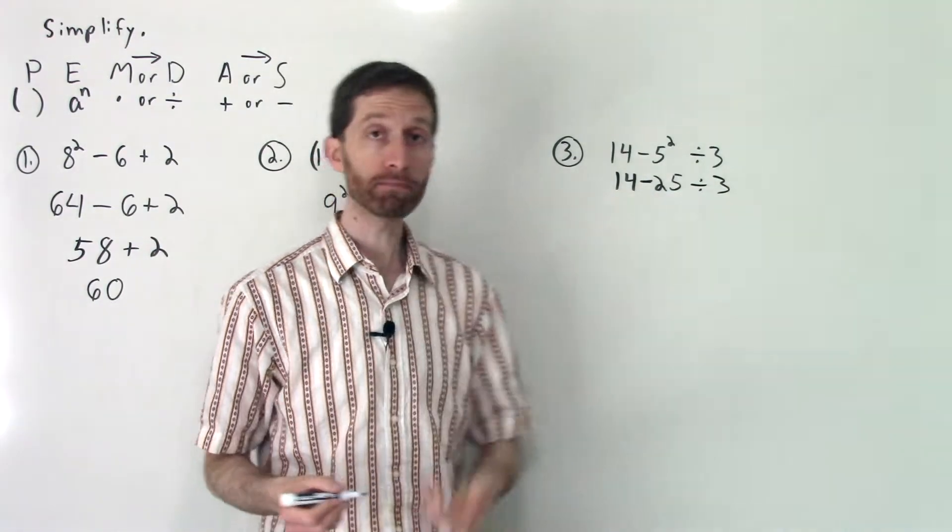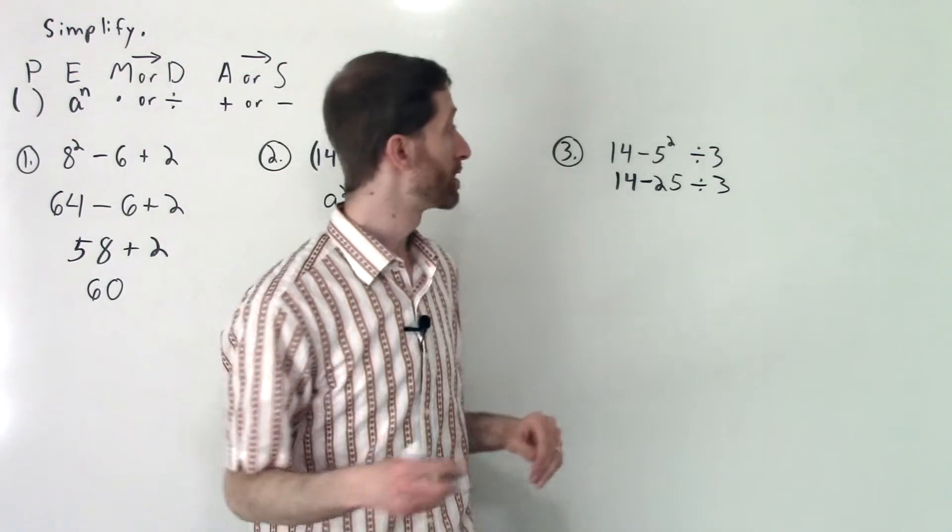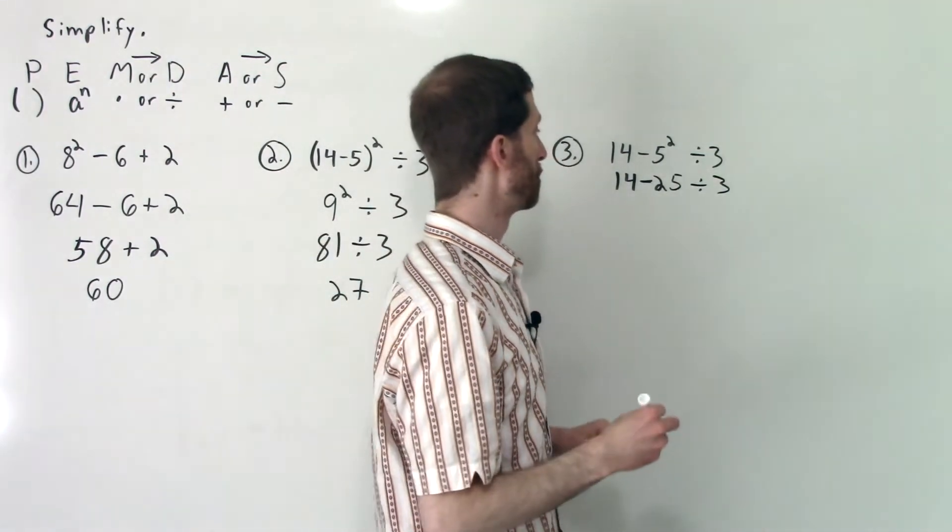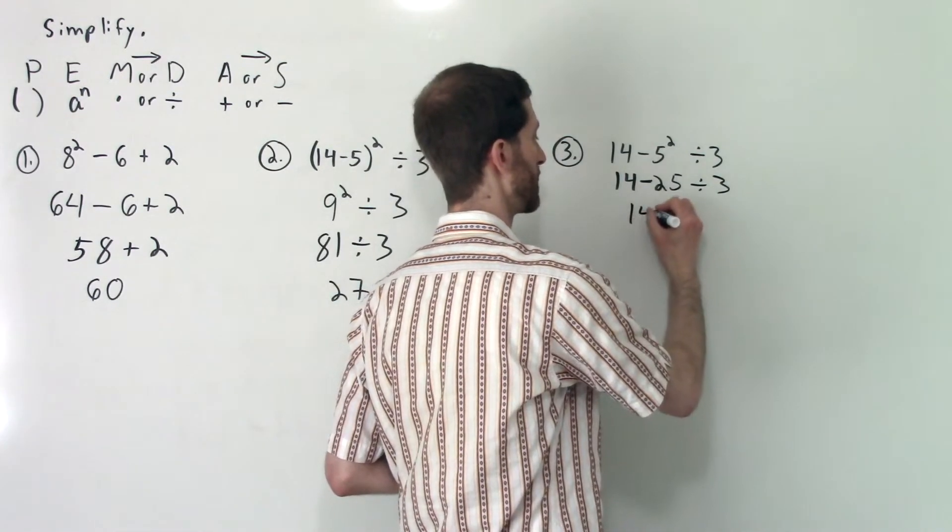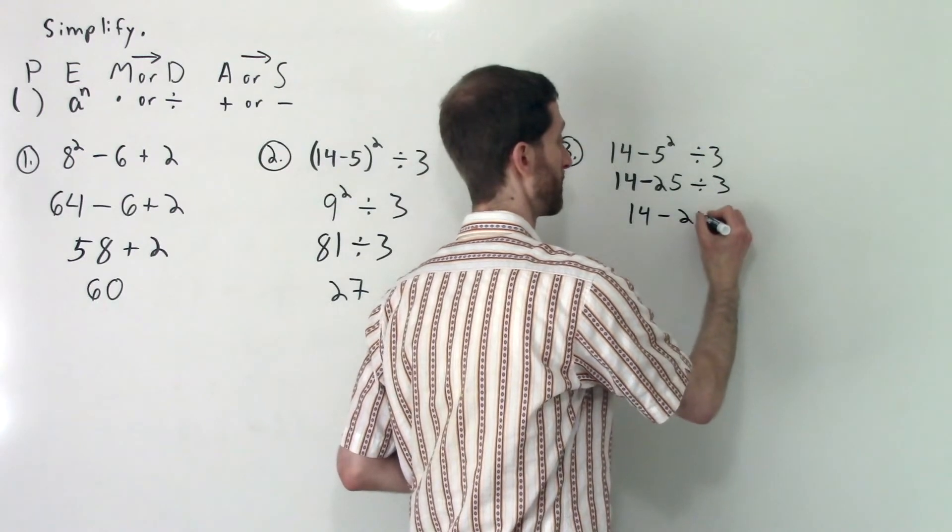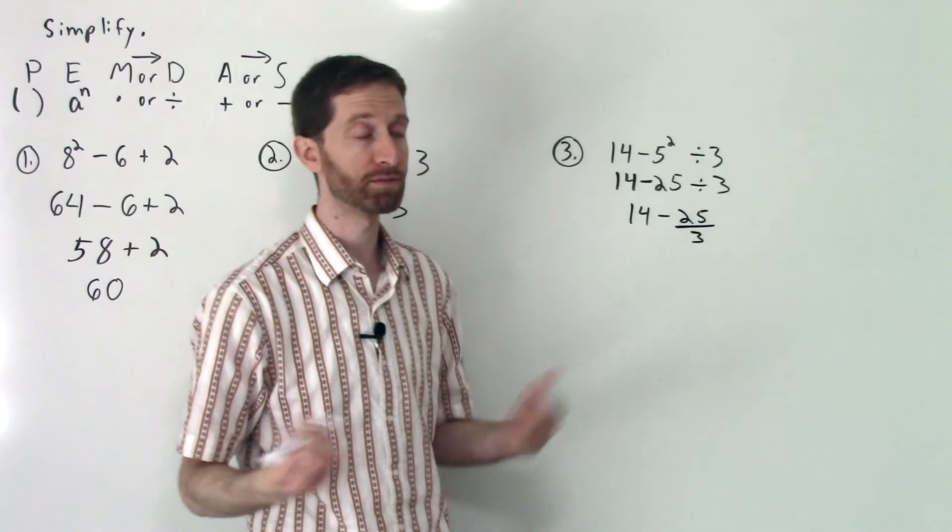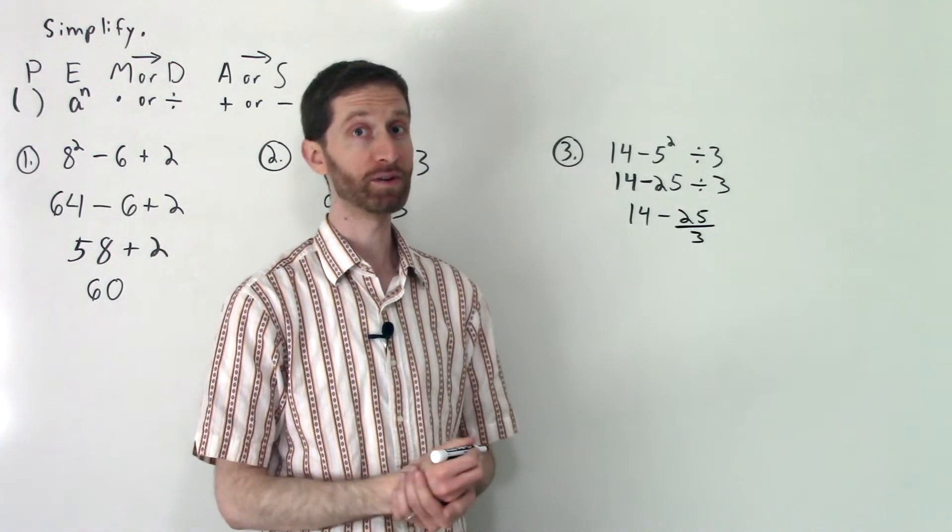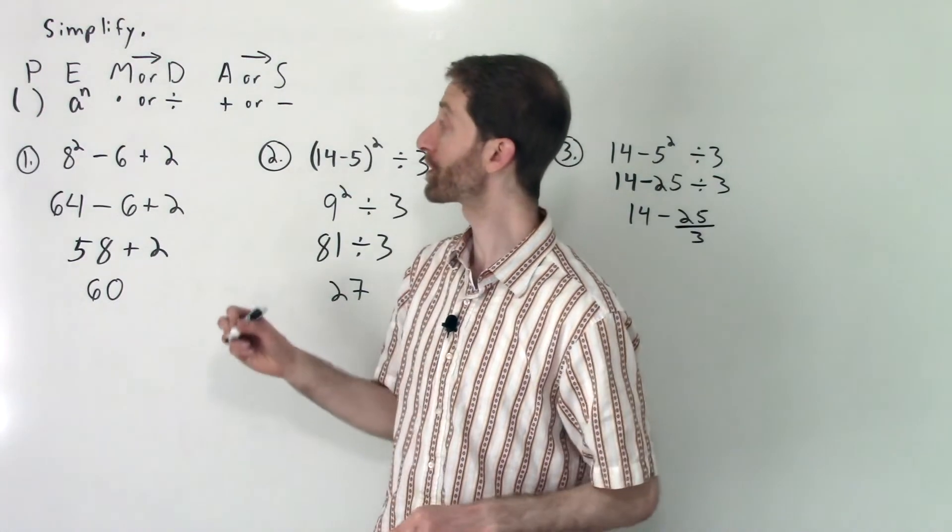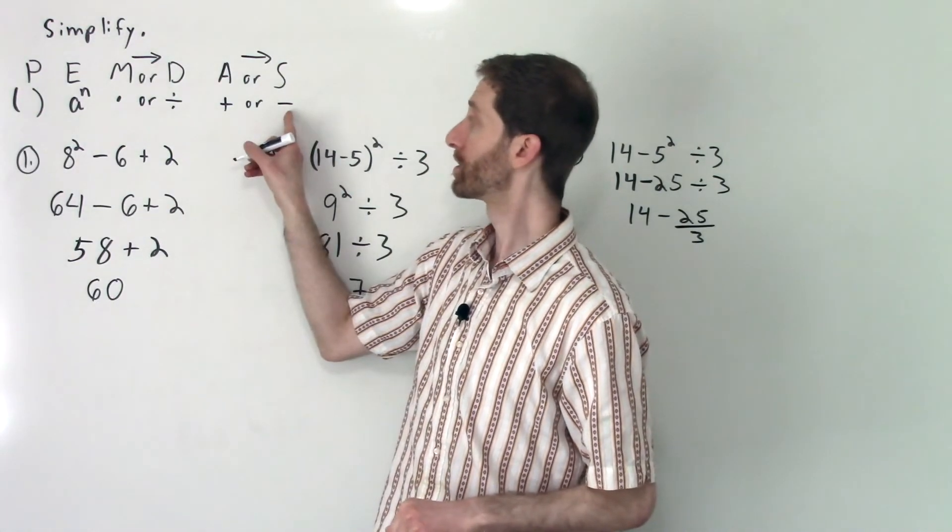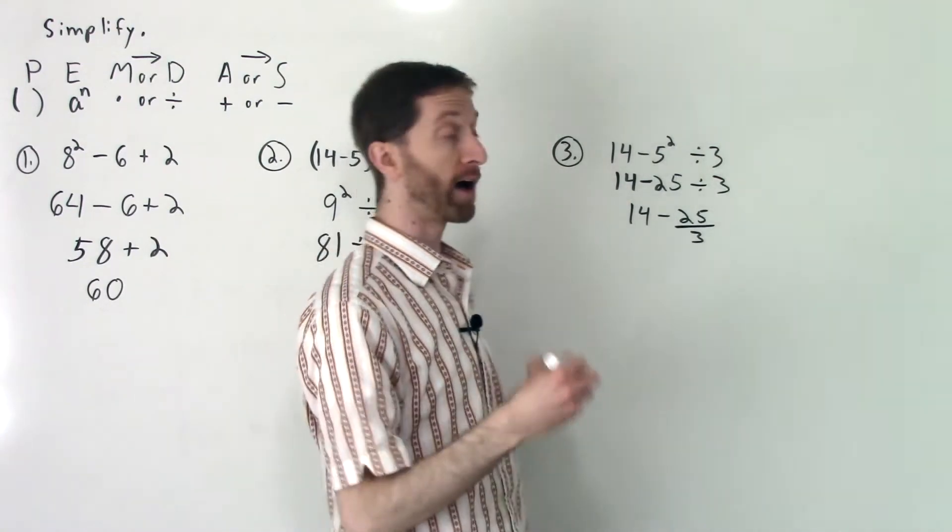What's left? Subtraction and division. Order of operations shows us that division happens before subtraction, so I'll do the division first. So we're going to have 14 - 25/3. 25 divided by 3, I'm just going to leave it like that. You might not like the fraction, but that's what we have left to deal with. And then we're going to do subtraction.